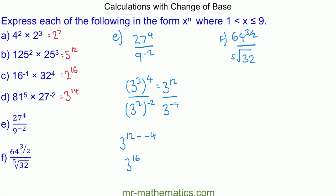For question f, we write 64 and 32 to the base of 2. The numerator is 2 to the power of 6, raised to the power of 3 over 2. Using the power rule, we have 6 times 3 over 2, giving 2 to the power of 9.